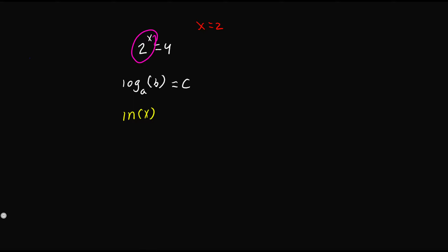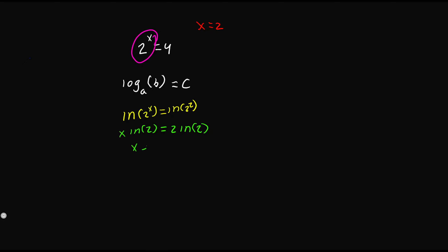We can also solve this by using the natural log. We take the natural log of both sides: ln of (2^x) is equal to ln of (2²). Then we move x to the front: x times ln of 2 is equal to 2 times ln of 2. Dividing both sides by ln of 2, we see that ln of 2 cancels on both sides, giving us x is equal to 2.